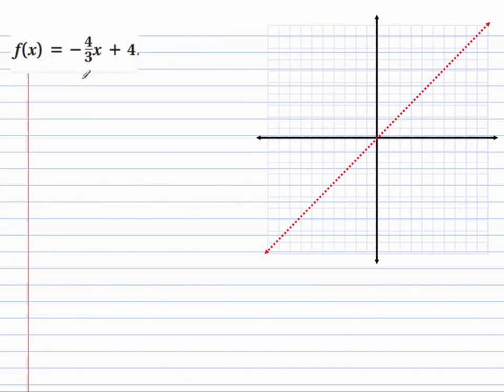So suppose I have f of x is minus 4 thirds x plus 4. To find the inverse, I'm going to first of all replace the f of x with y. So y is minus 4 thirds x plus 4. Sometimes that's a preliminary step. So step one, we switch x and y. So x is equal to minus 4 thirds y plus 4.